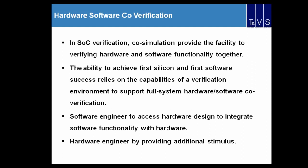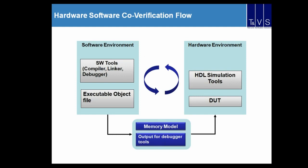This is a common flow for software and hardware co-simulation. From EDA vendors we get software tools such as compiler, linker, and debugger. Using C, C++, and assembly, we write the particular functionality, generate executables, and load them into a memory model. ARM provides tools like CoreSight along with debugging interfaces. These are loaded into the DUT, and using a stimulus tool we verify the particular features.